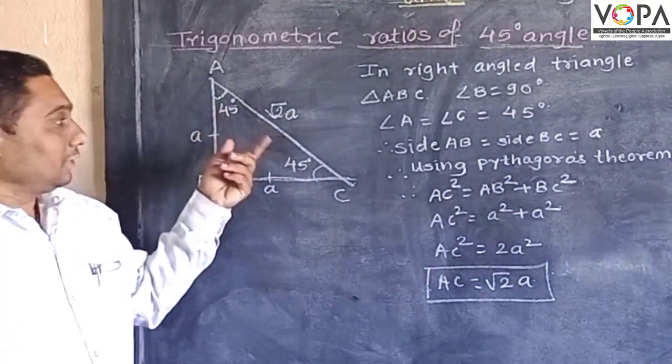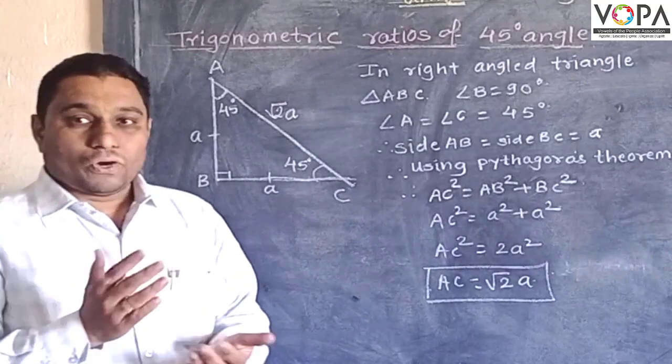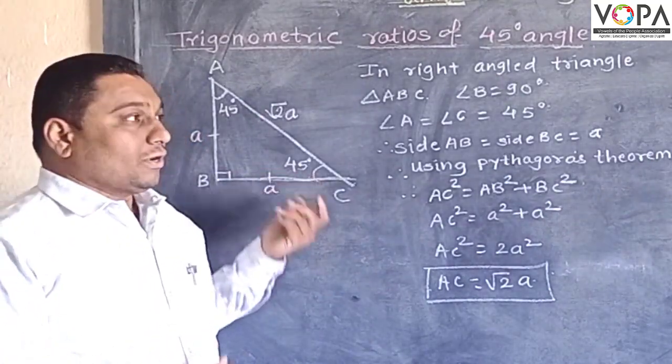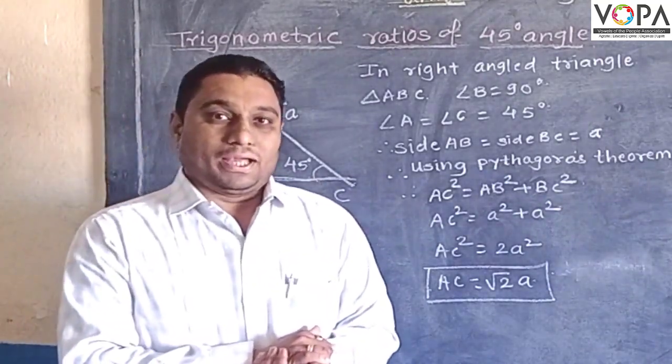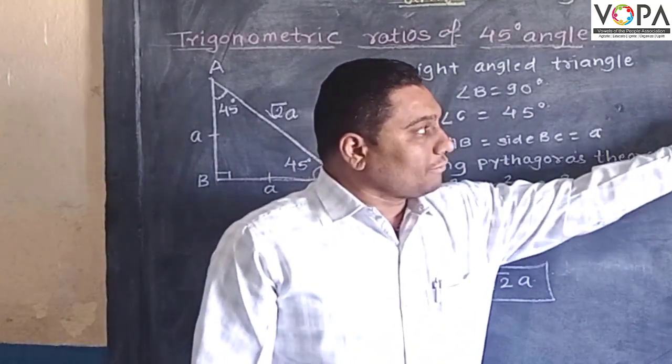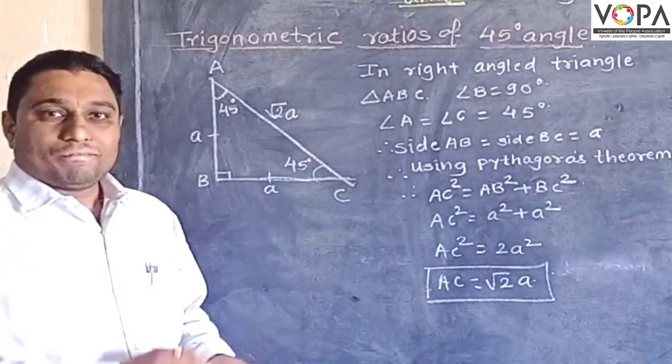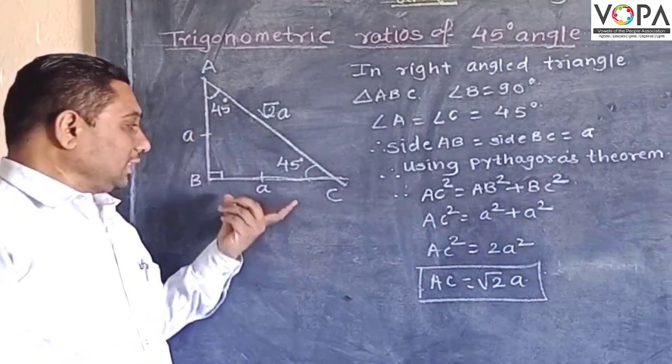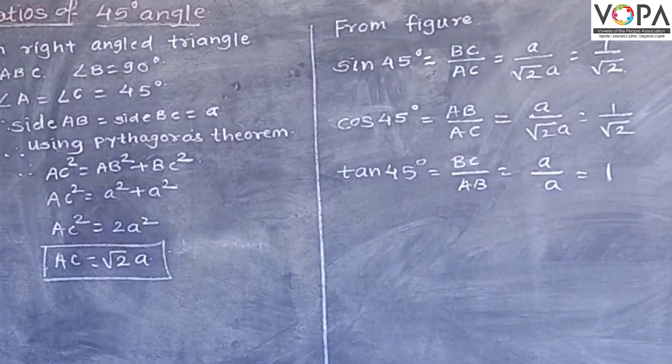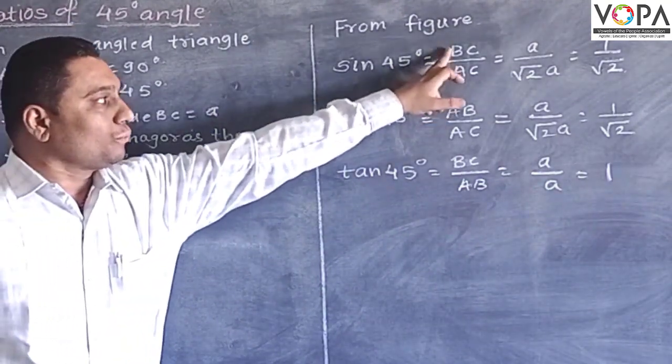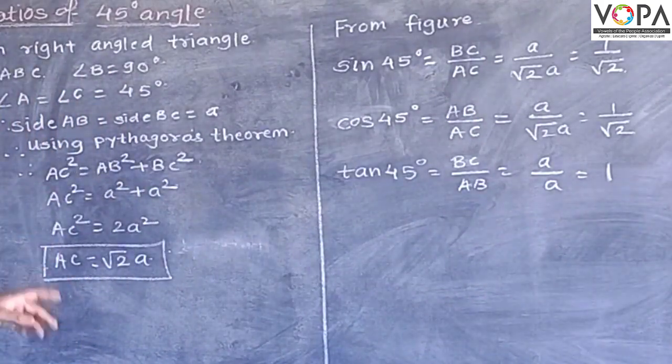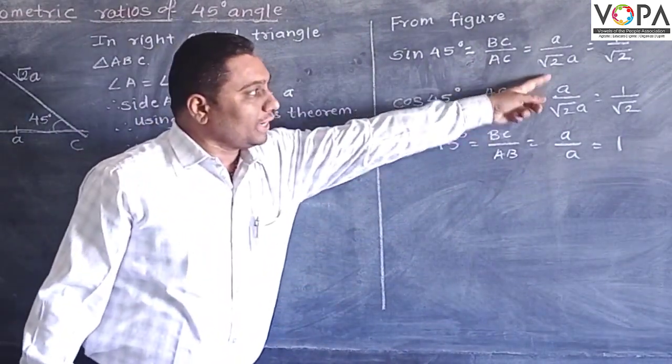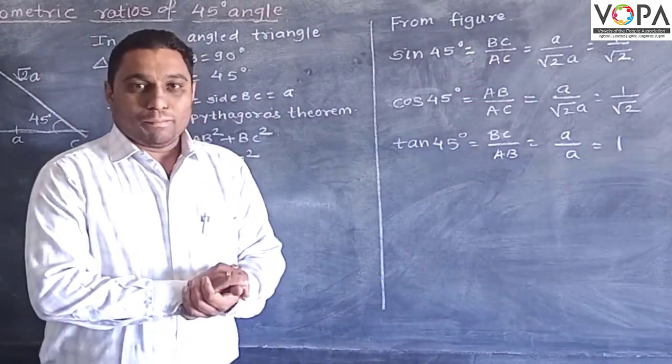Now what are the sine, cosine, and tangent ratios for these 45 degree angles? So here sine 45 degrees, for angle A the opposite side is BC and hypotenuse is AC. So sine of 45 degree angle is equal to BC upon AC. If we put down the values of BC, that is A, and AC, square root of 2A, which is equal to 1 upon square root of 2.